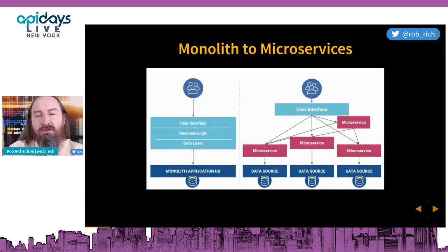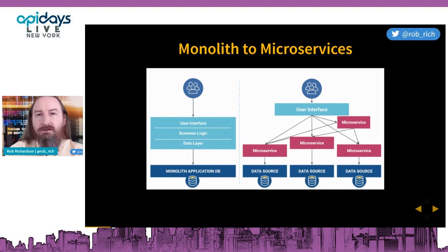Why did we do this? When we had a monolith, all of the things were packaged together so that we could deploy easily — because deployment was hard. Containers have solved this, and now we can deploy really easily. So we end up with lots of little pieces that can be deployed, upgraded, and replaced really easily.